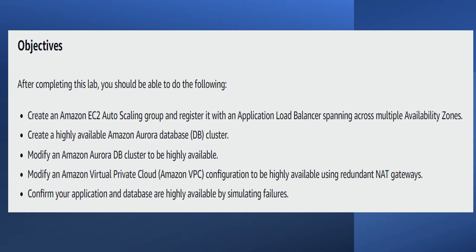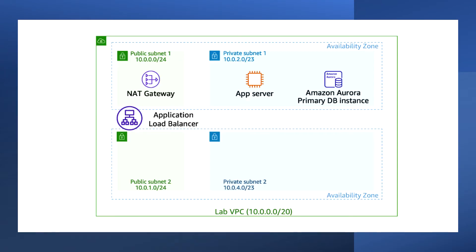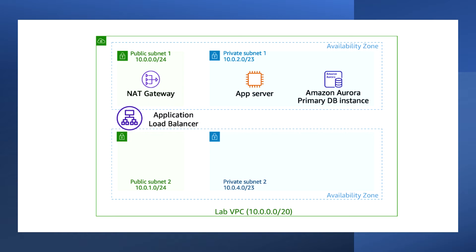In Task 1 we will review the setup that was already created for this lab. We have created the Amazon VPC which is 10.0.0.0/20, as you can see in this image. If you are not sure how to create this VPC, you can refer to the previous video. You can create the following things as described there.